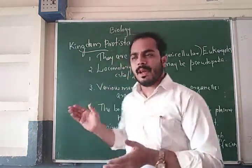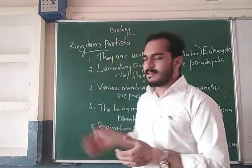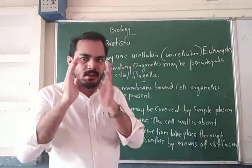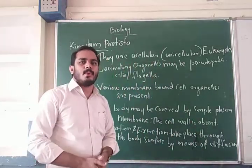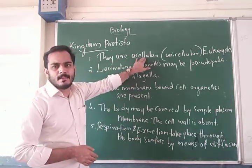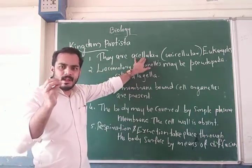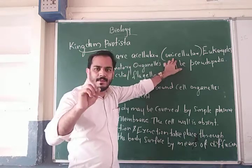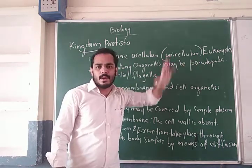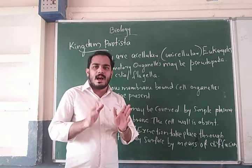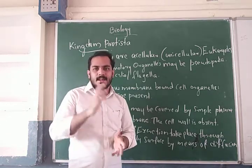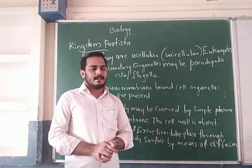There are a few characteristic features of Kingdom Protista. The first one: they are acellular, meaning unicellular — having only one cell. They are eukaryotic organisms, with a nucleus containing chromatin materials, meaning chromosome materials.